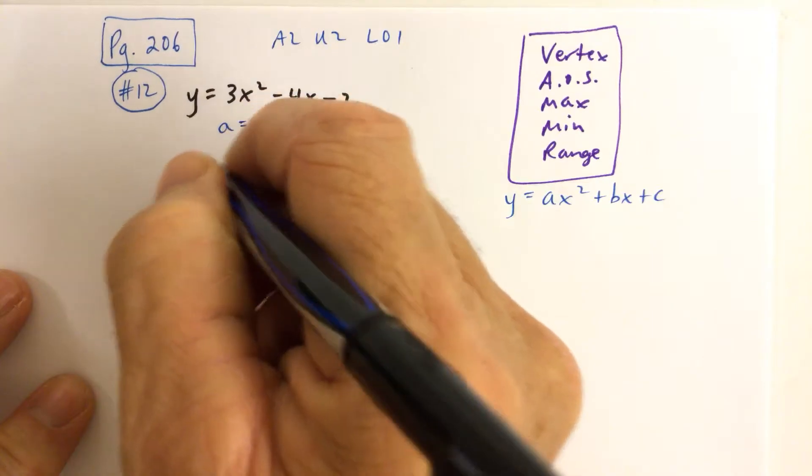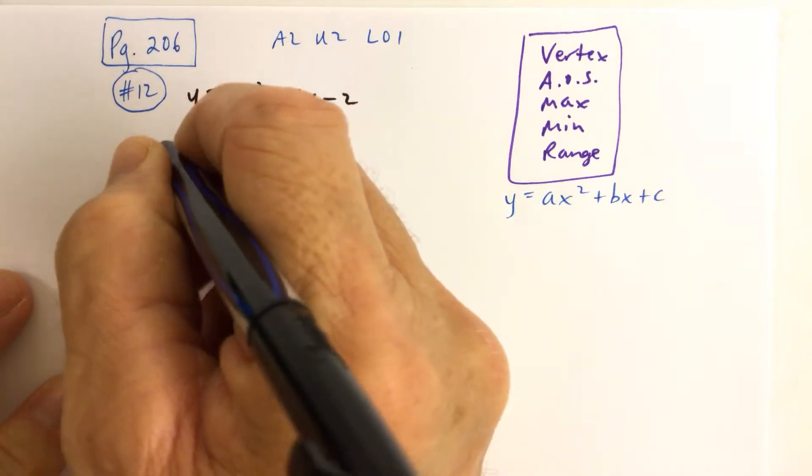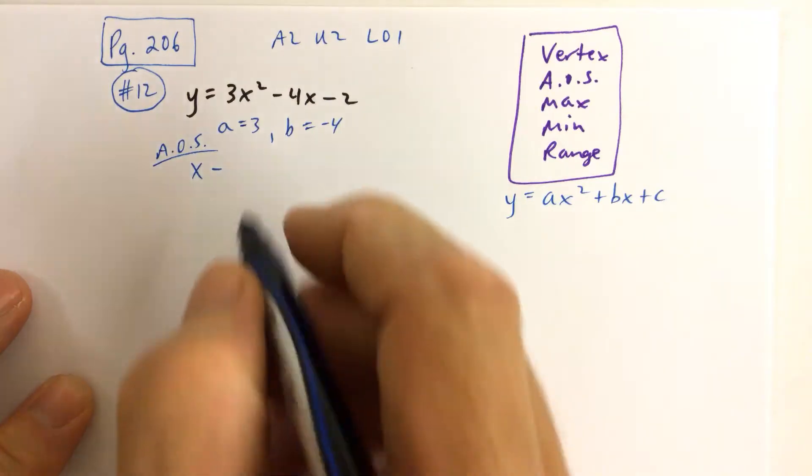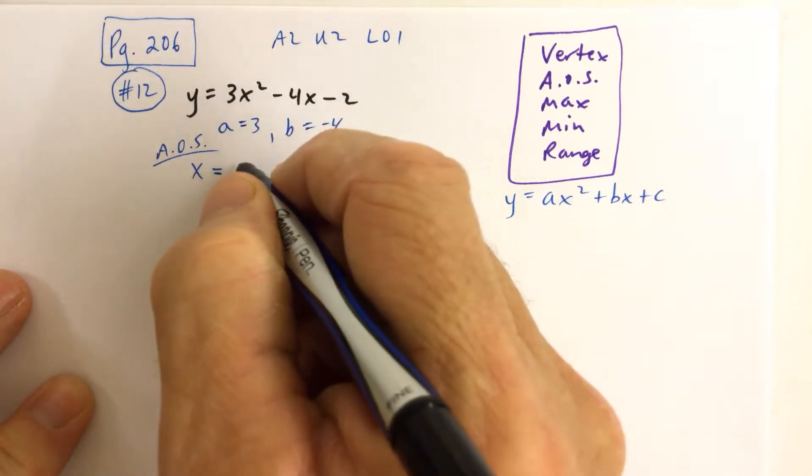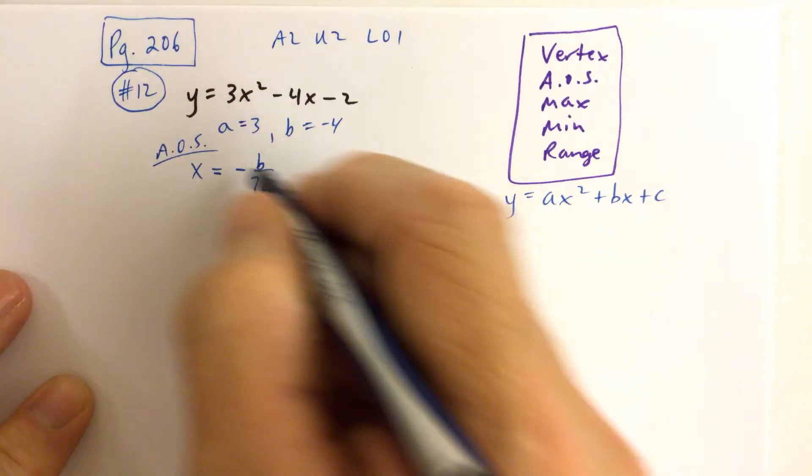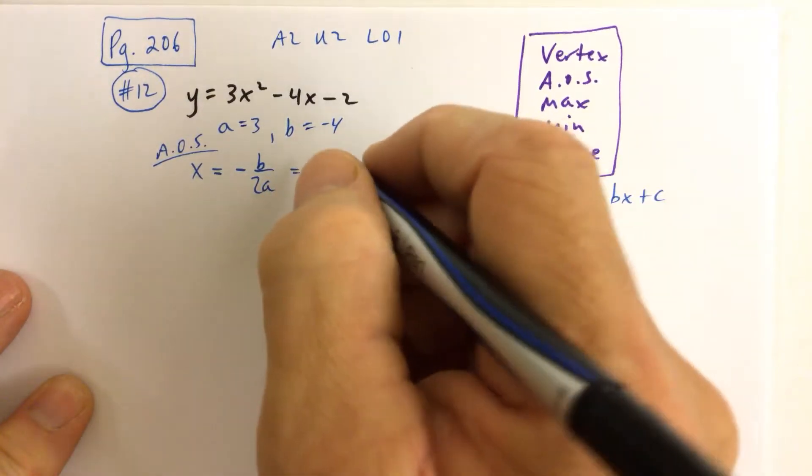Because the x-coordinate of the vertex, in fact the axis of symmetry, the equation for the axis of symmetry, is x equals the opposite of b over 2a, or negative b over 2a.